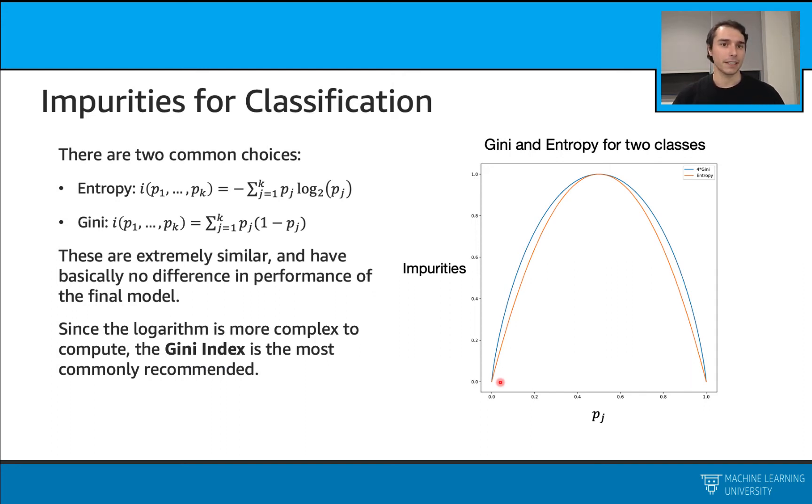Entropy is given like this. We have this negative summation of the probability times logarithm of this probability. In this case, this probability is the probability of having that data point from that class. For example, let's say I have two data points from class 1 and three data points from class 2 in this node. The probability for class 1 is 2 over 5, the probability for class 2 is 3 over 5. Overall, we calculate this per class, then we sum it over all the classes.